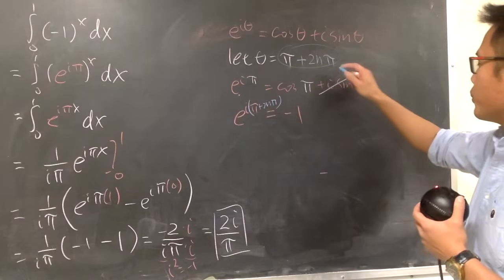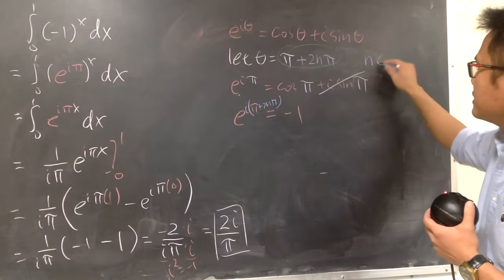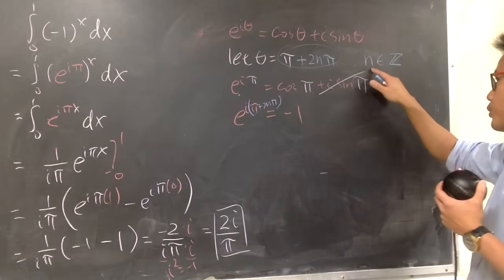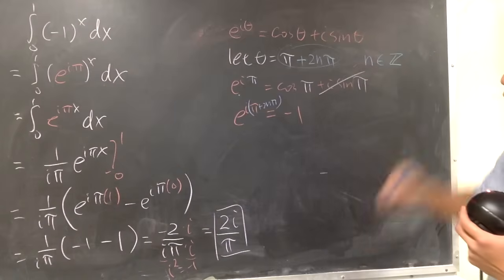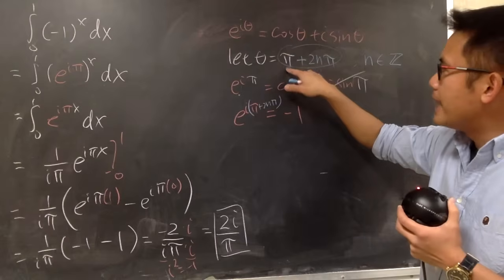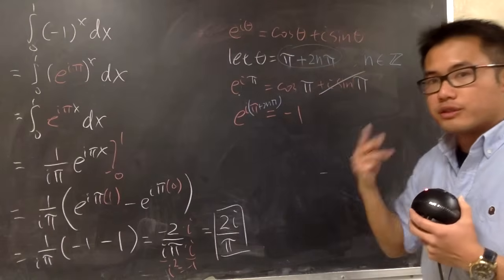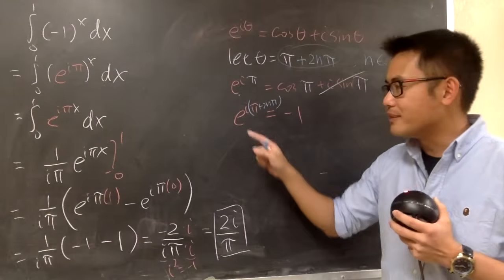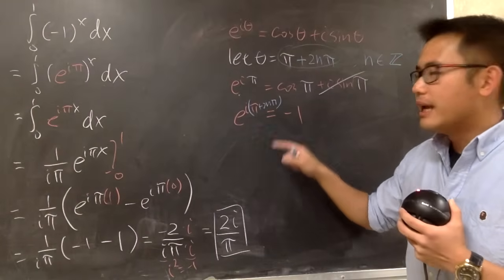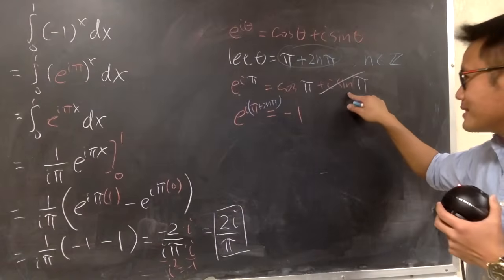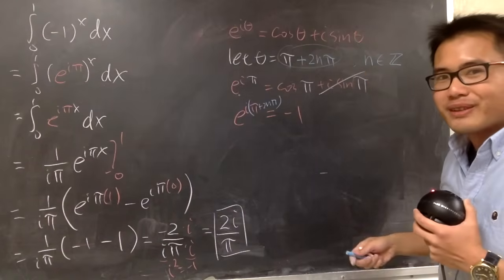And of course, right here, when we say 2n pi, n is just an integer. It can be positive, it can be negative. This is just a notation for n being an integer. So, for example, I can say, let's do pi plus 2 pi, which is 3 pi. When you plug in 3 pi, on the left-hand side, you will have e to the 3 pi i. And then that's equal to cosine of 3 pi, which is negative 1, plus i sine of 3 pi, which is still going to be 0.